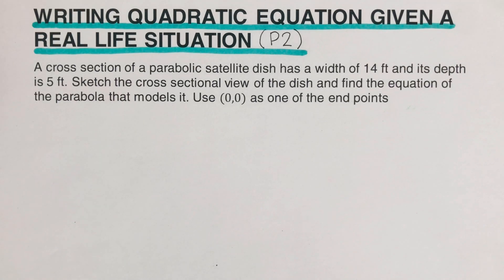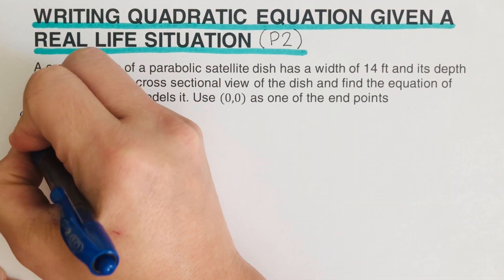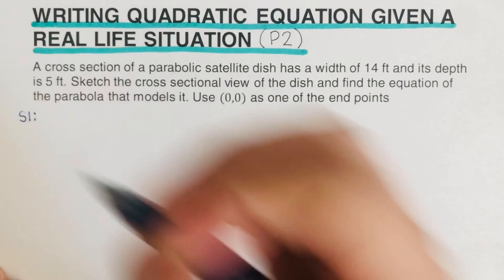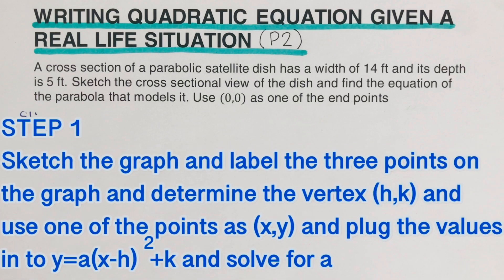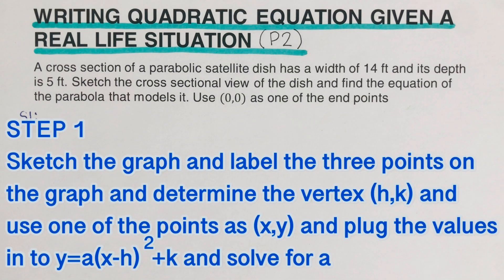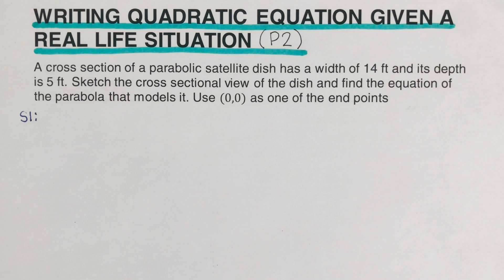Step 1: sketch the graph and label the three points. Determine the vertex (h, k) and use one of the other two points as (x, y). Plug those values into the vertex form of a quadratic equation, which is y = a(x − h)² + k, and solve for a.